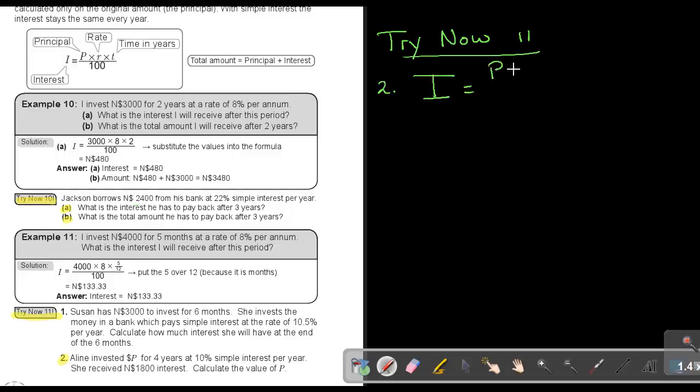Start again with the formula. Interest, it's principal multiply rate, multiply time, divide by 100. Now, just do substitution. What is the interest? It's 1,800. What is the principal? I don't know. But what is the rate? That's 10. What is the time? That's 4. And I divide by 100.